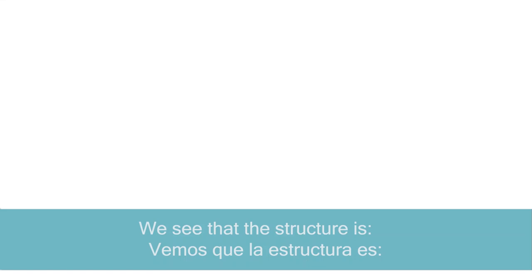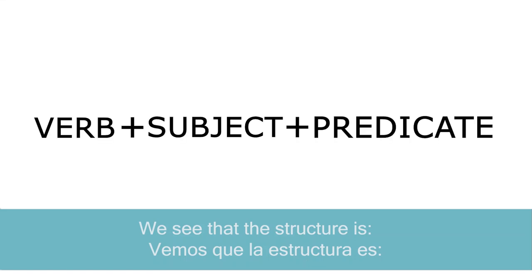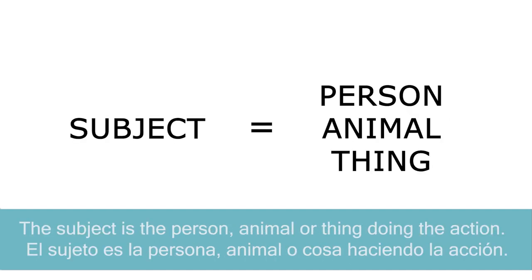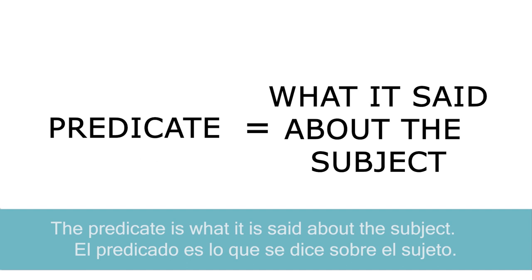We see that this structure is the verb, subject, predicate. The verb is the action. The subject is the person, animal, or thing doing the action. The predicate is what is said about the subject.